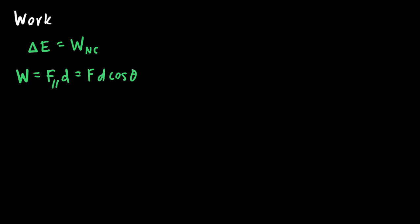If those two vectors point in the same direction — say an object where the force vector points to the right and the displacement vector also points to the right — then the angle between those two vectors would be zero. The cosine of zero is equal to one, so the work done on this object due to force F would just be equal to F times D times one, which we can write simply as F times D.